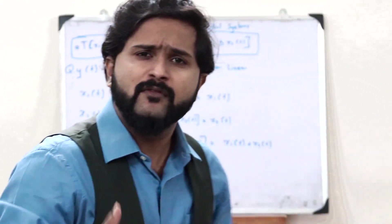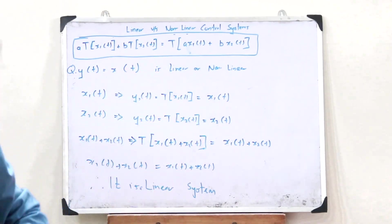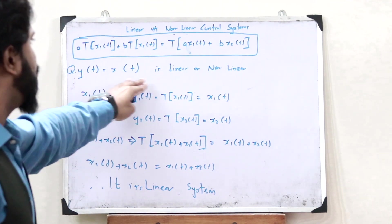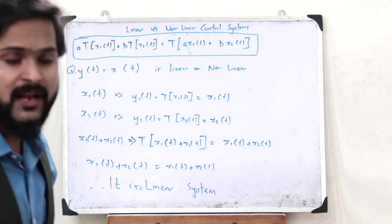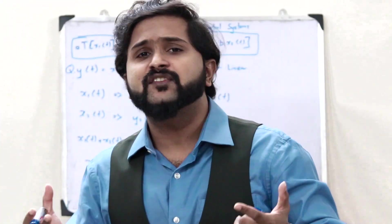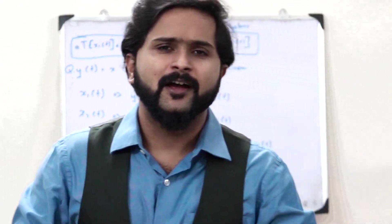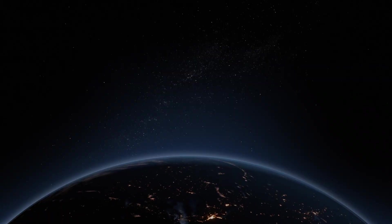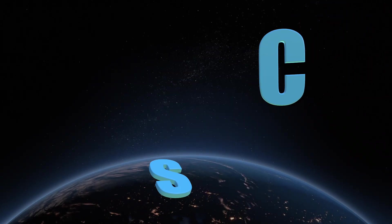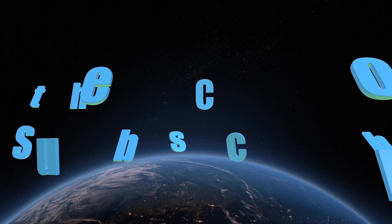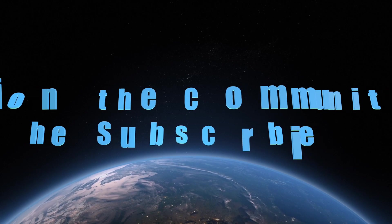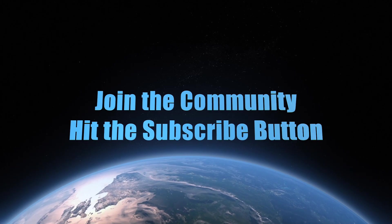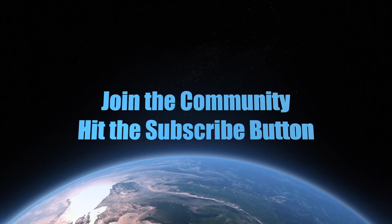All we have to do is know this particular principle — the superposition principle — and compare the left-hand side and the right-hand side for the equation we are given. If it satisfies the superposition principle, it is a linear system; if it does not, we call it a non-linear control system. I hope you guys now have a clear understanding of linear and non-linear control systems. If you found this video informative, please hit the like button and subscribe. We'll be discussing further topics in upcoming videos — stay tuned, stay subscribed, and I'll see you in the next video. Thank you.